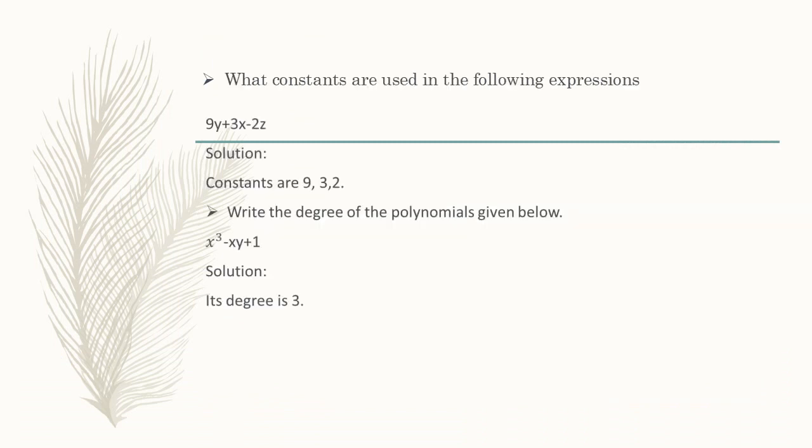Write the constants used in the forming expression 9y plus 3y minus 2z. Solution: Constants are 9, 3 and 2. We cannot change their value. These are fixed.